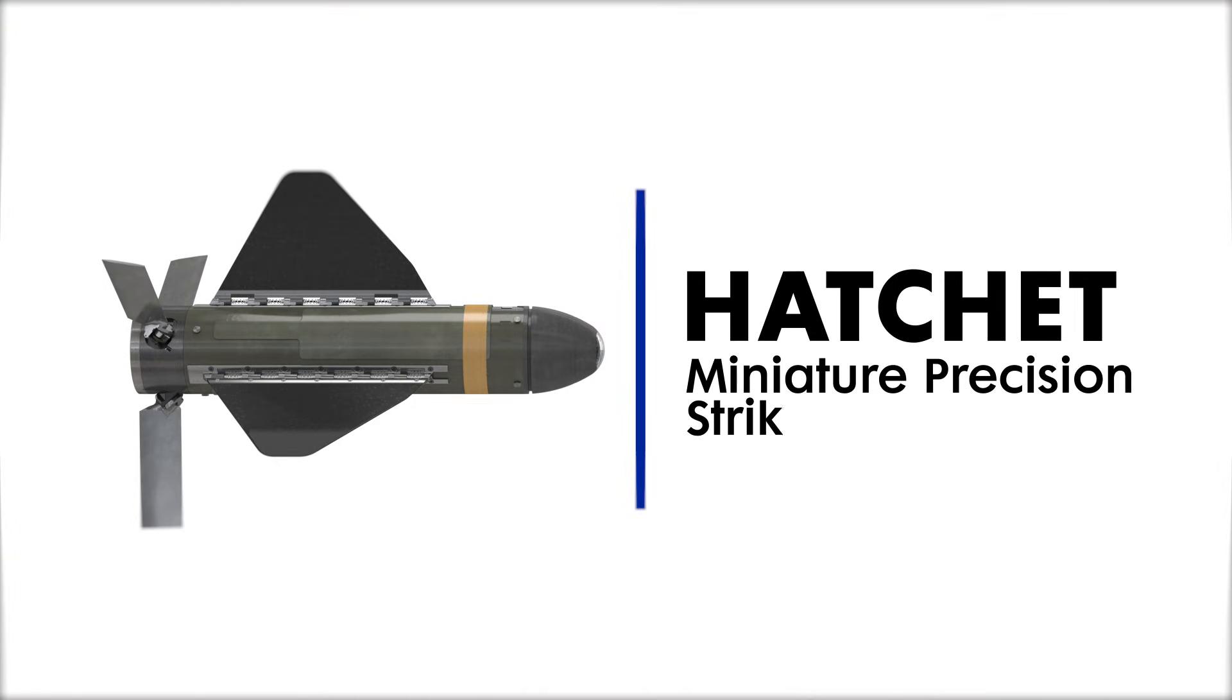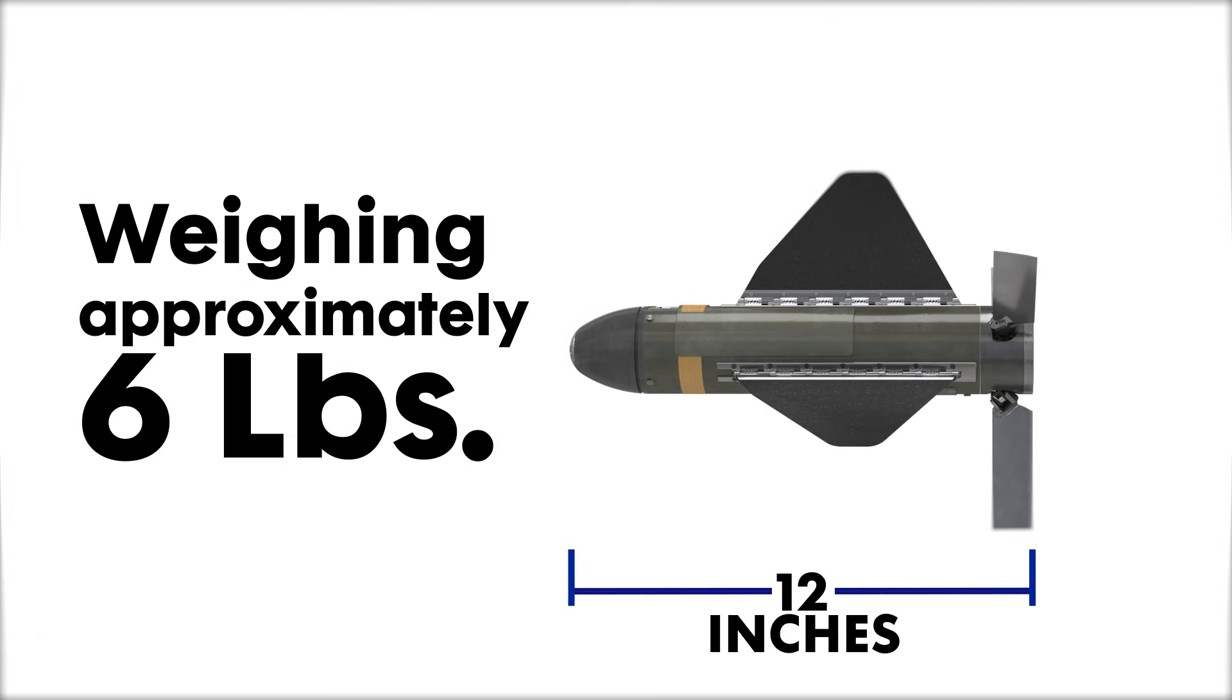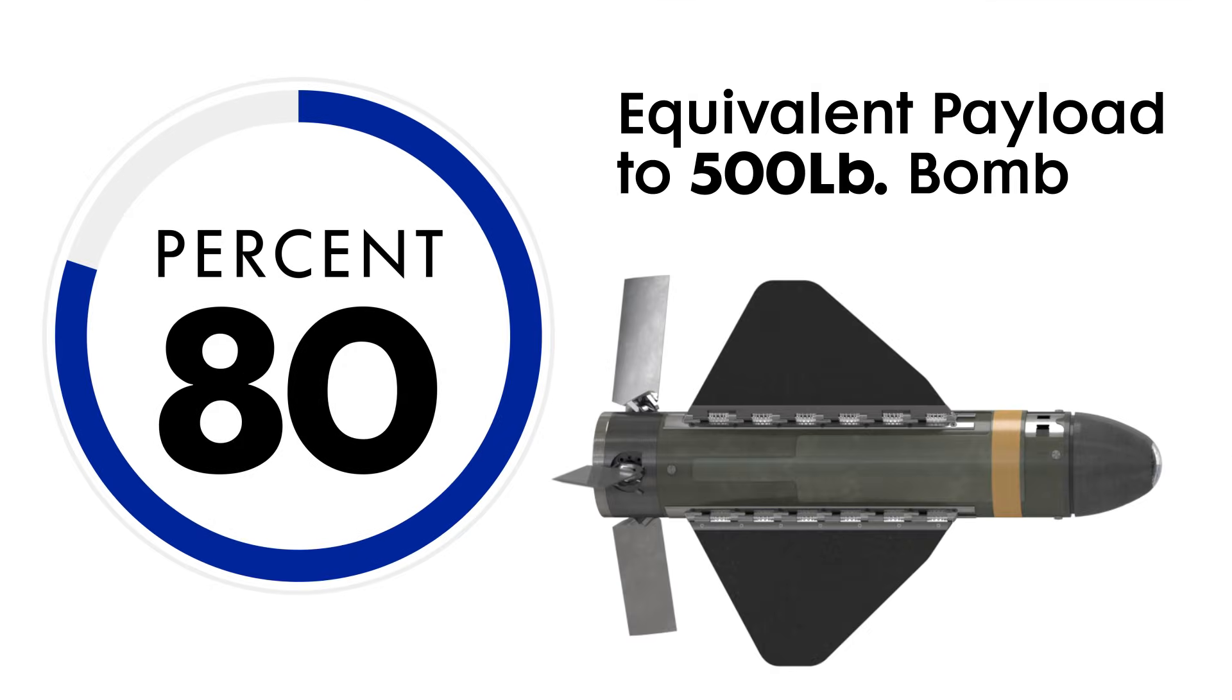Hatchet is a miniature precision strike munition designed for use on a multitude of manned and unmanned aerial platforms. Weighing approximately 6 pounds and 12 inches in length, Hatchet's payload is equivalent to 45 to 80 percent of a 500-pound bomb, depending on the target.